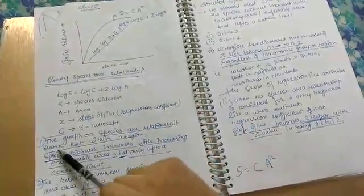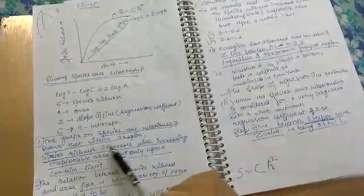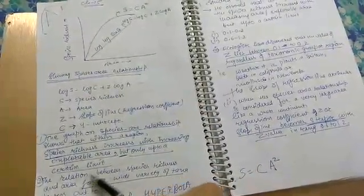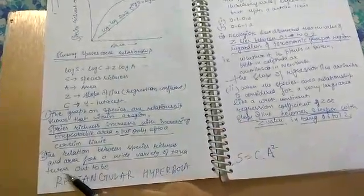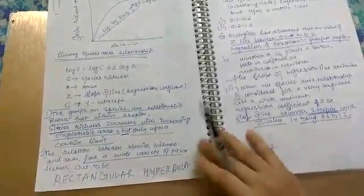The graph on species-area relation showed that within a region, species richness increases with increased explorable area, but only up to a certain limit. The relation between species richness and area for a wide variety of taxa turns out to be a rectangular hyperbola.